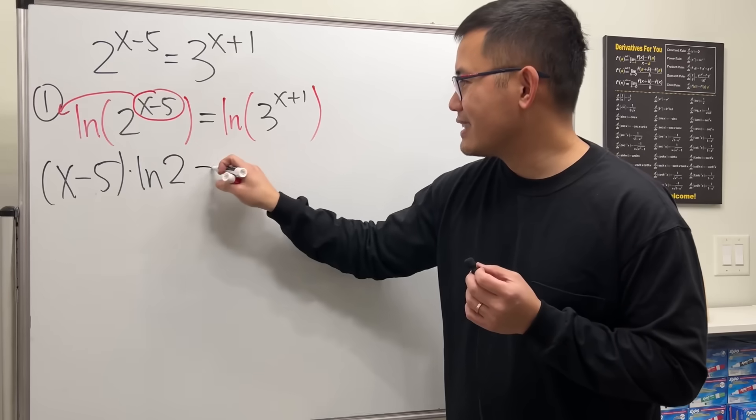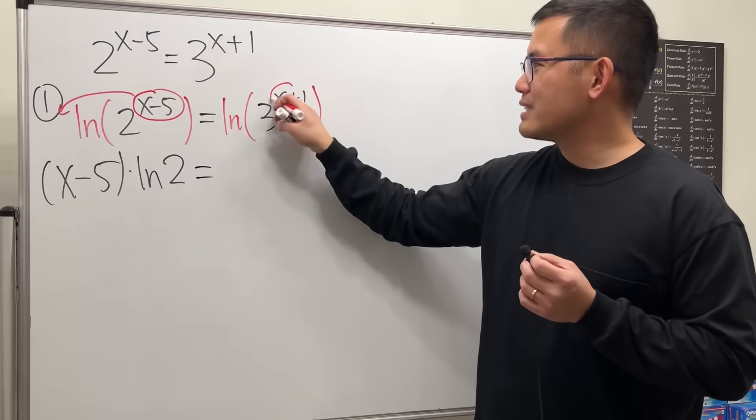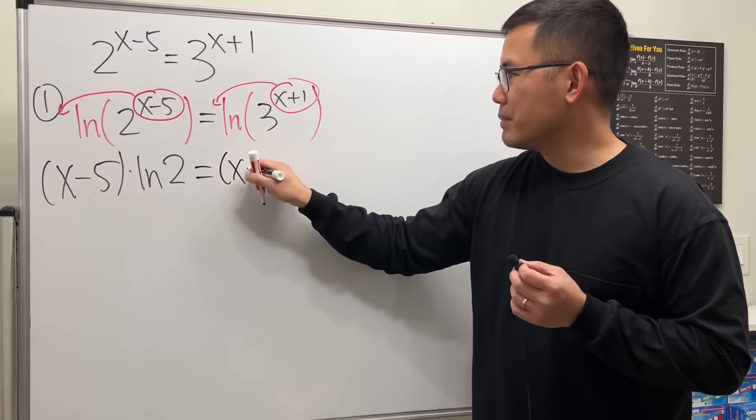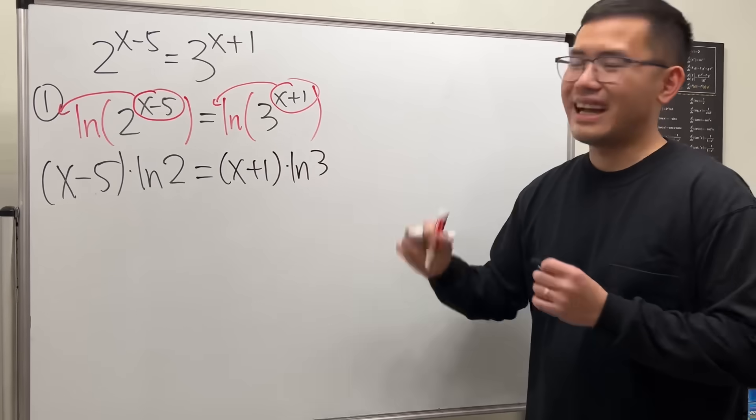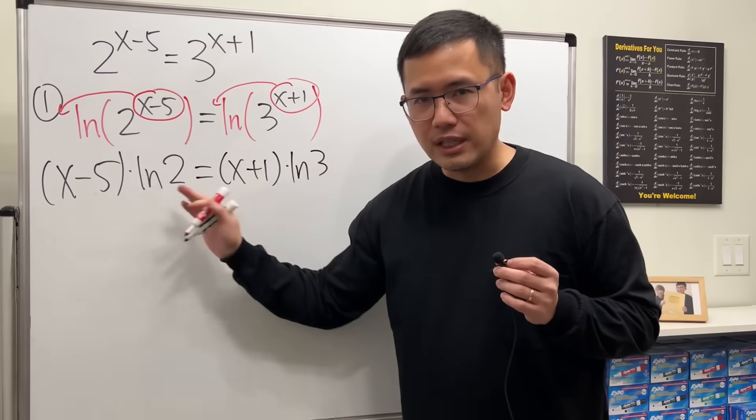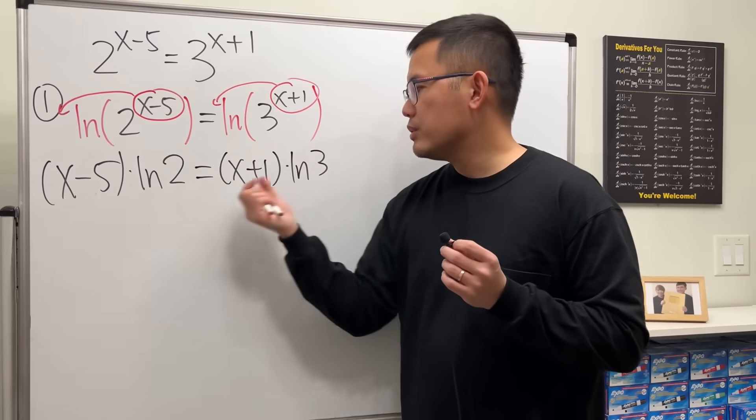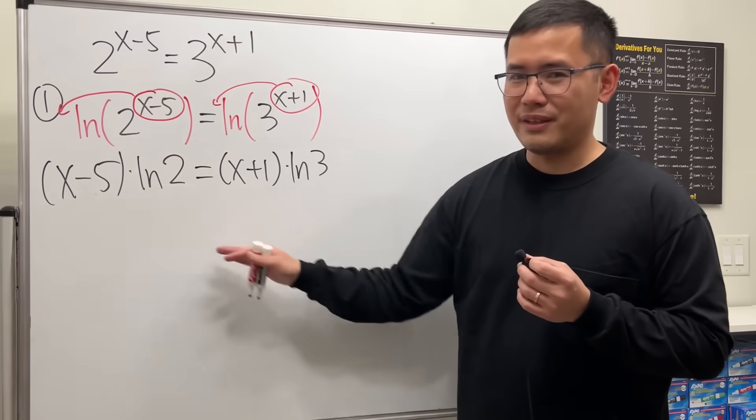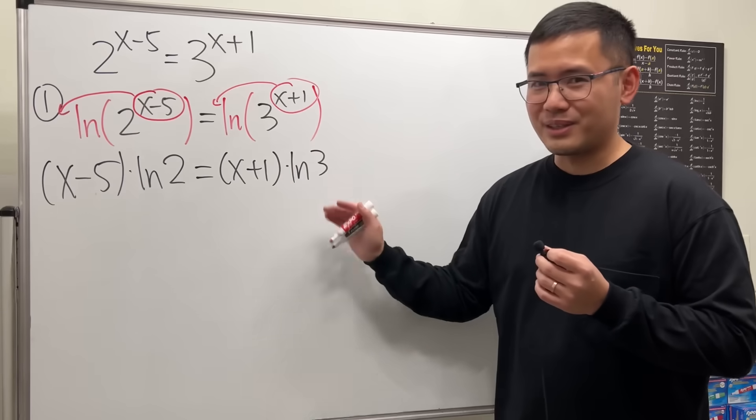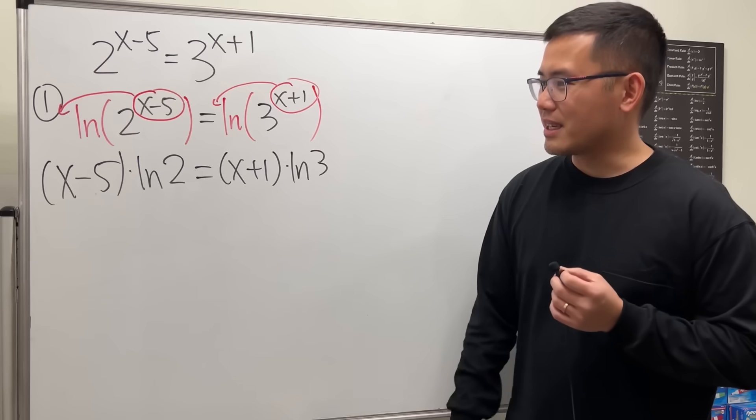Now for the right-hand side, you do the same thing. Put the exponent to the front. We have x plus 1 times ln 3, like that. Now this is just a linear equation, because ln 2 and ln 3, they are just regular numbers. 0 point something, 1 point something actually. You can let me know the numbers in the comment down below. But we'll keep them as how they are, and then just distribute.